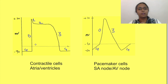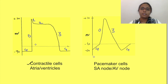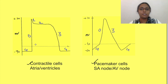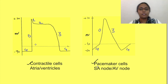Here is a diagram showing the action potential of contractile cells — that is, the atrium and ventricles — as well as pacemaker cells, which include the SA node, AV node, and bundle of His. There are some significant differences between these action potentials.